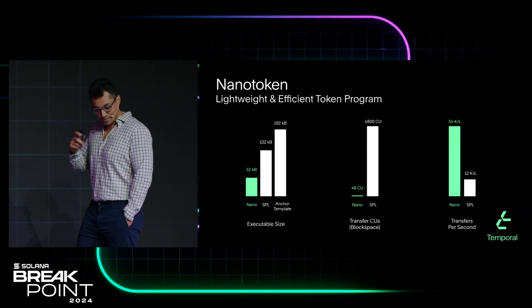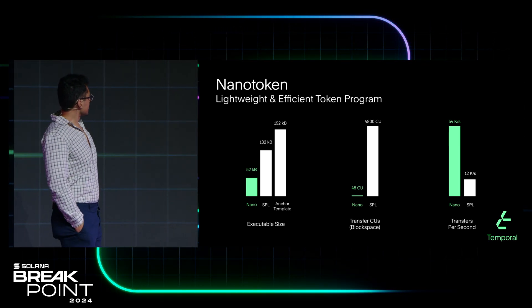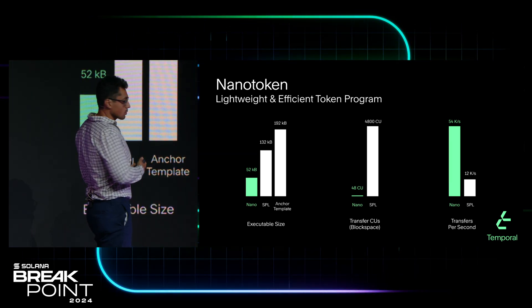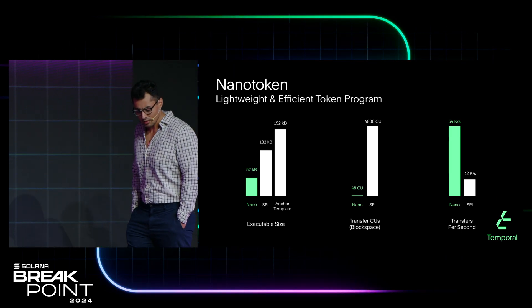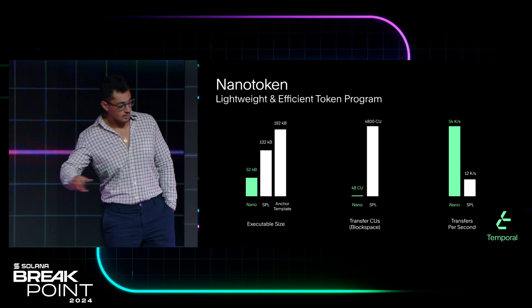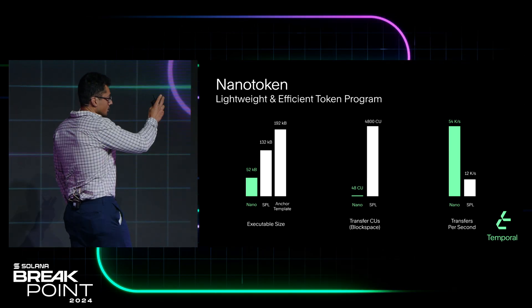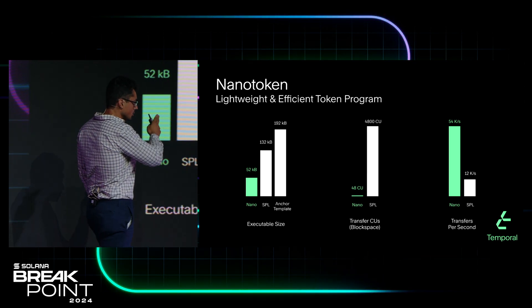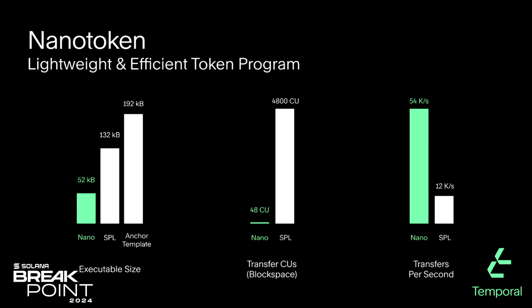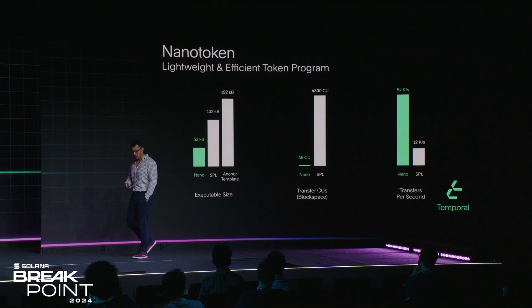You may have heard of a token program I wrote called InnoToken. This was sort of the first application of these principles. With these techniques, we were able to reduce the size of the executable almost by a factor of three compared to SPL, and almost by a factor of four compared to a totally new blank Anchor program. It uses 100 times less block space per transfer. And even with all the overhead of the current Agave VM, it still does 54,000 transfers per second on a single core. This is totally parallelizable across distinct token account pairs, so add in eight to sixteen execution threads and I'll let you do the math.